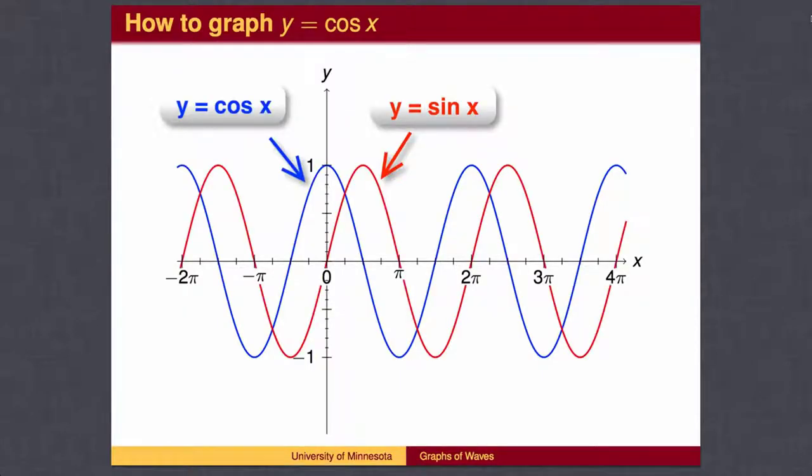Here are both graphs together. You may notice that the two graphs look the same, except that the sine wave is the cosine wave shifted to the right. The peaks and valleys repeat the same top, middle, bottom, middle, top pattern, just at different locations.